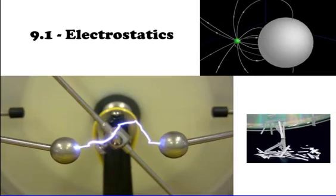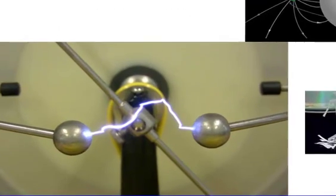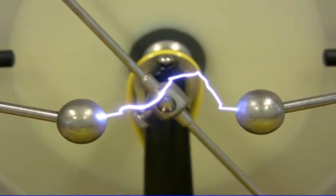Guys, we're going to be going out of the macro scale here. We've been dealing with the macro scale, dealing with Newtonian mechanics, and we've been dealing with fluid mechanics — everything on the macro scale. We're going to be going to the subatomic scale now, down to electricity and magnetism.